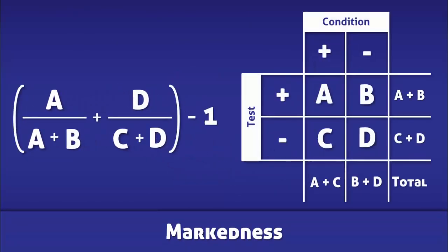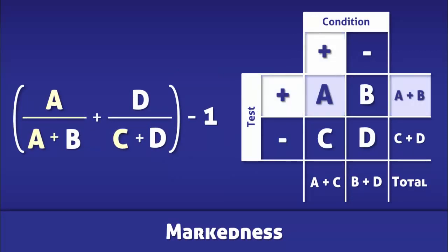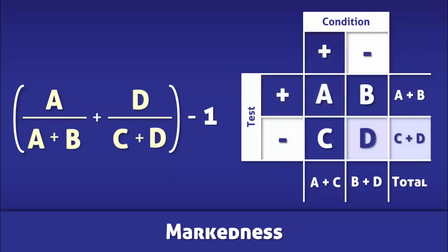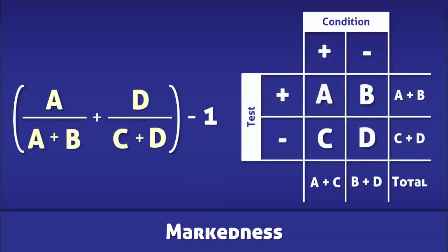Once more, markedness is calculated by adding the positive predictive value to the negative predictive value and subtracting the sum by 1.